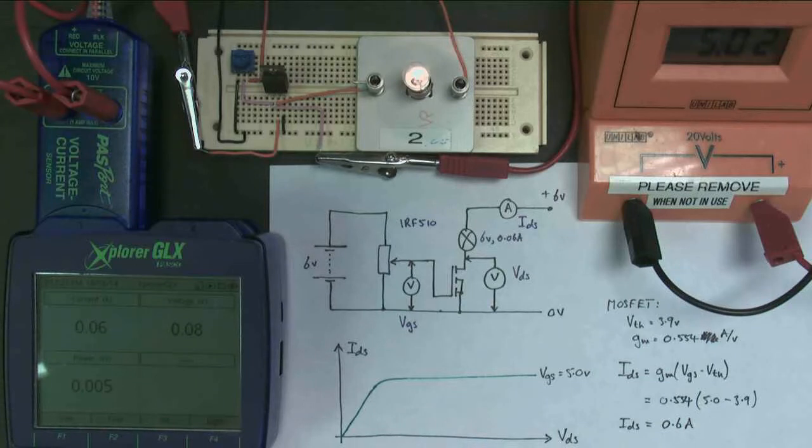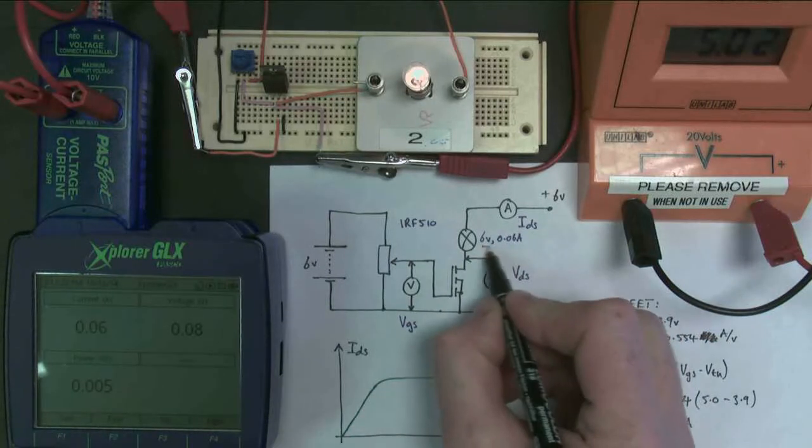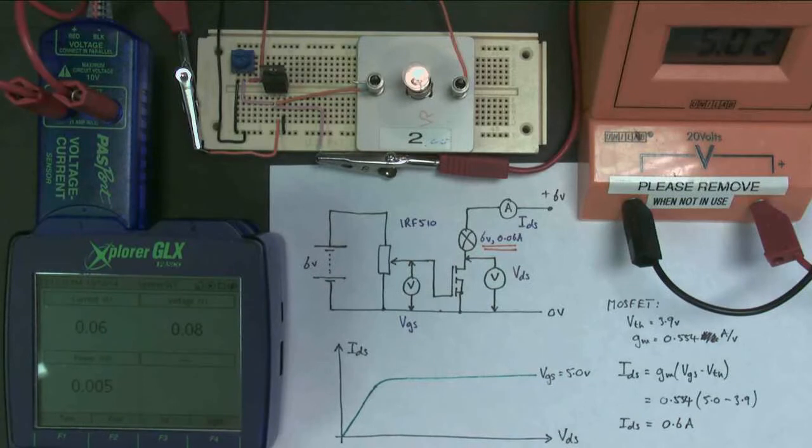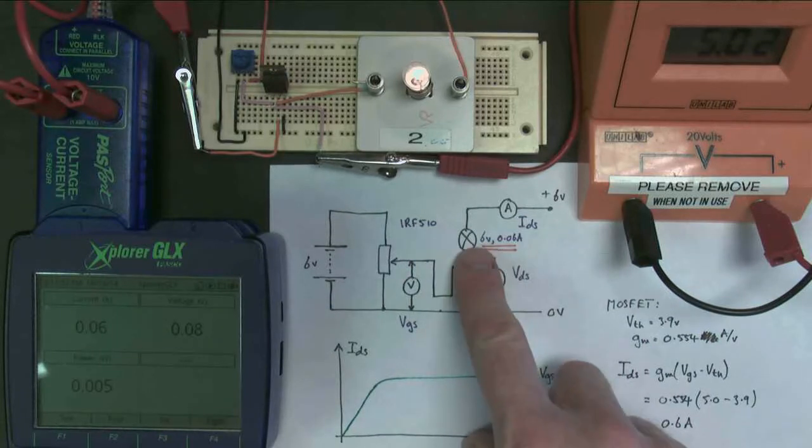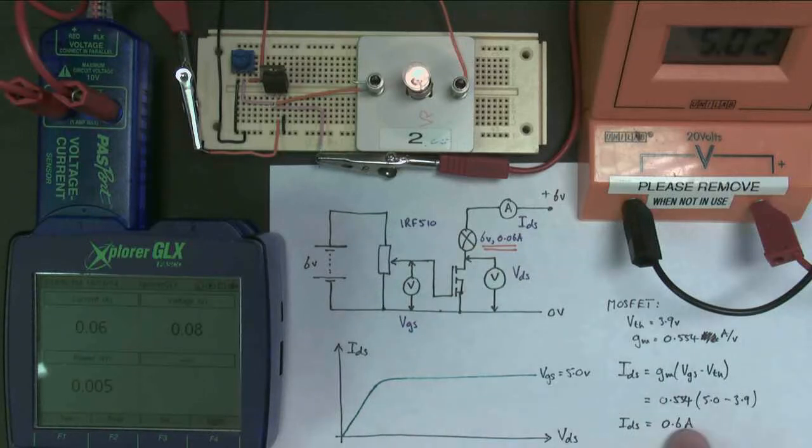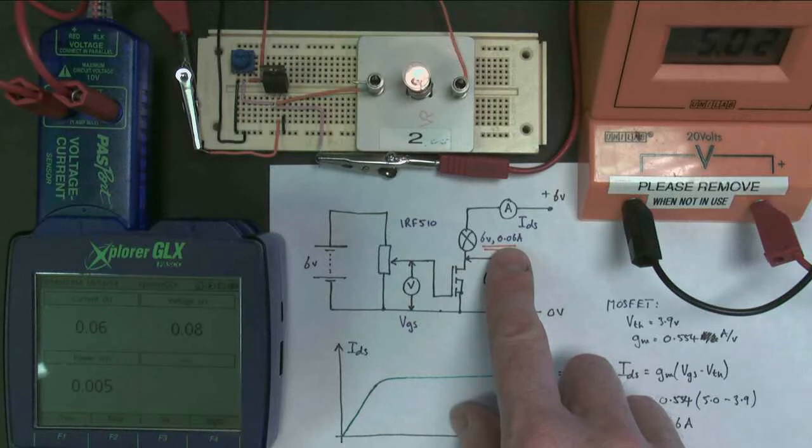And the question is, why is this? Well, this bulb here has these ratings. It's rated at 6 volts, 0.06 amps. It has a certain resistance when it's at its operating temperature, which means that only 0.06 amps of current flows, rather than the 0.6 amps we were actually expecting. There's an awful lot of 6s in this question. So, this bulb is now the limiting factor for the MOSFET. The actual current flowing is 0.06 amps because that's what the bulb's resistance is limiting it to.